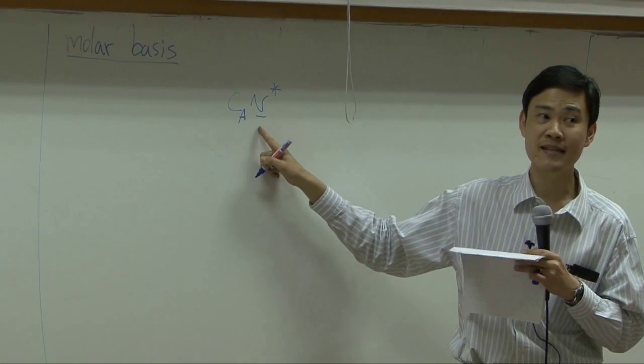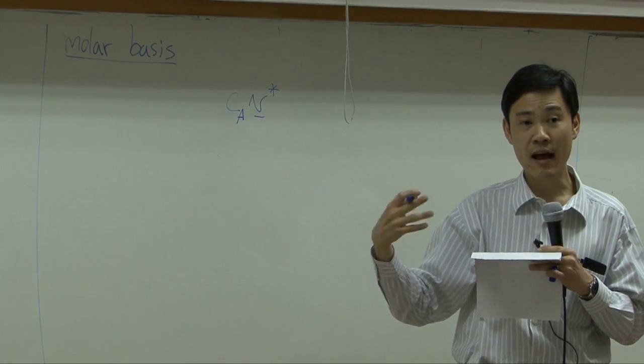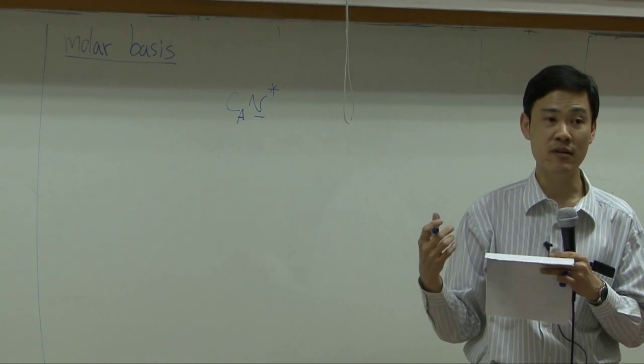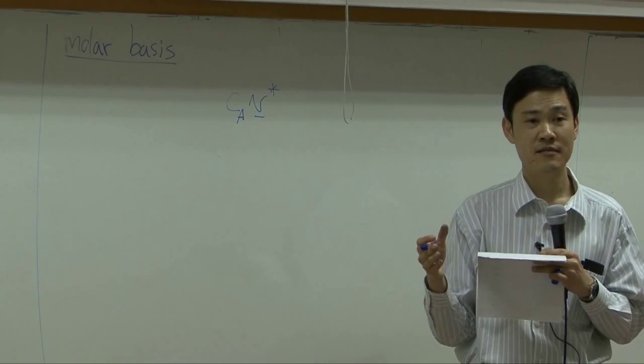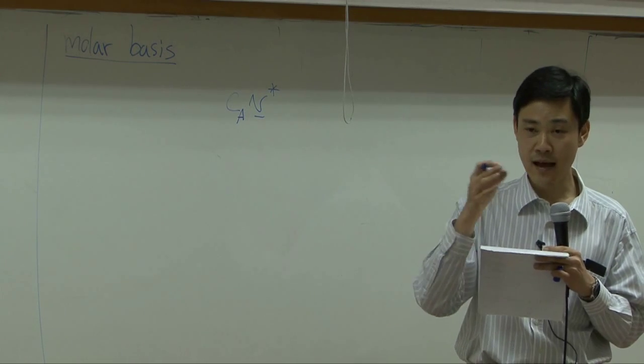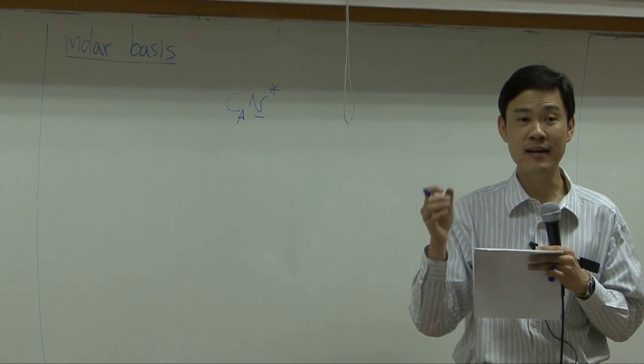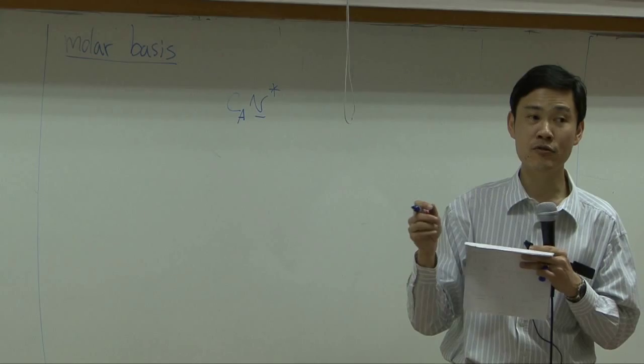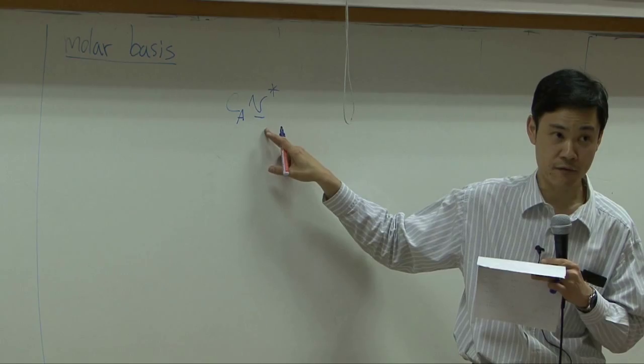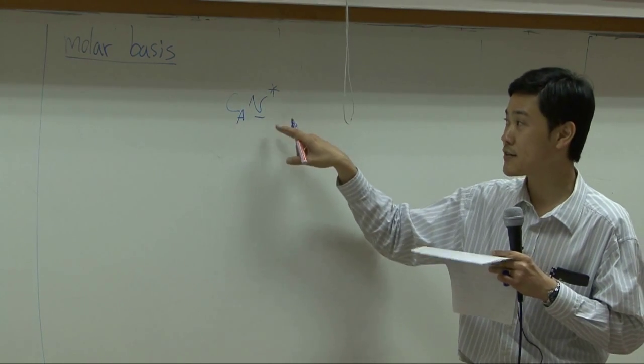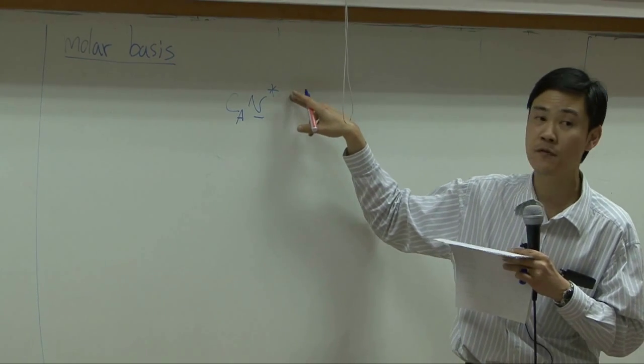How we come up with this? This will be exactly the same as what we did for mass basis. Just change how we count. Instead of counting mass, you count the number of moles. You count number of moles of A passing through the screen. So how many moles you have depends on concentration of A and velocity of the stream itself. But in this case, velocity is represented by average molar velocity. So instead of using V, we will use V star.